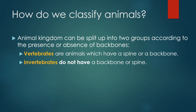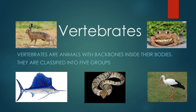The animal kingdom can be split into two groups according to the presence or absence of backbones. Vertebrates are animals which have a spine or a backbone, while invertebrates do not have a backbone or spine. Vertebrates are classified into five groups.